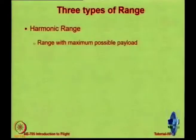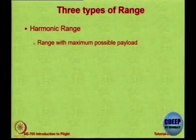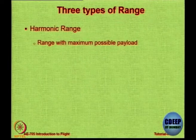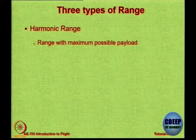The first is called harmonic range — how far you can go without compromising on maximum payload. An airline wants to make money, and to do so it wants to carry maximum possible payload, whether that is more cargo with fewer passengers or more passengers with less cargo. Without compromising total payload capacity, the airline wants to go as far as possible.